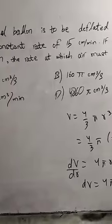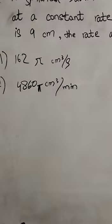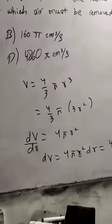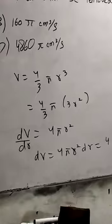π, option B is 160π, option C is 4860π cm³/min, and option D is 4860π cm³/sec. The formula for volume is V = 4/3 πr³.